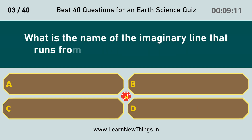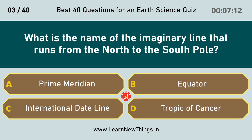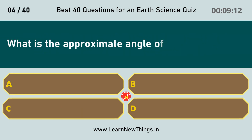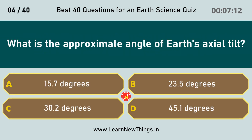What is the name of the imaginary line that runs from the North to the South Pole? Prime meridian. What is the approximate angle of Earth's axial tilt? 23.5 degrees.